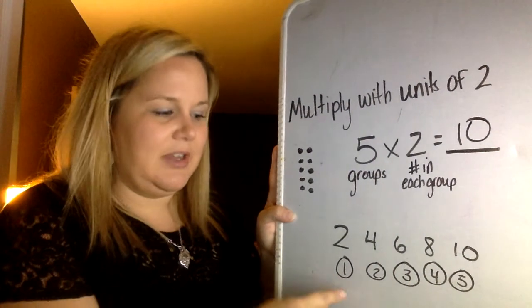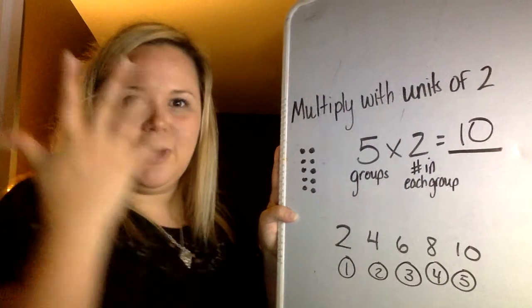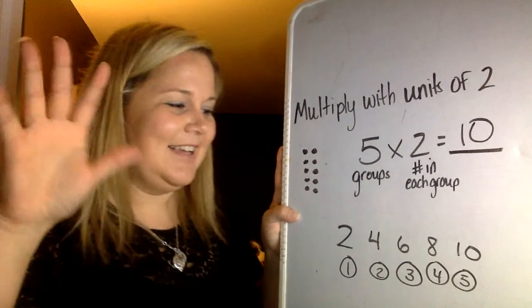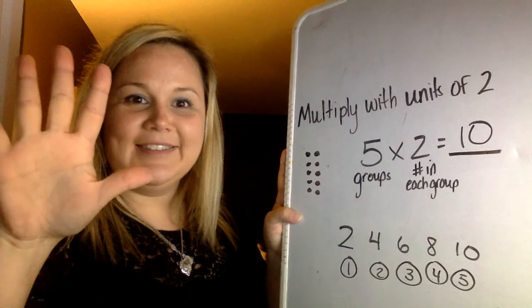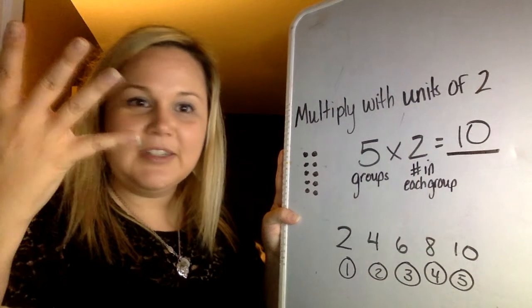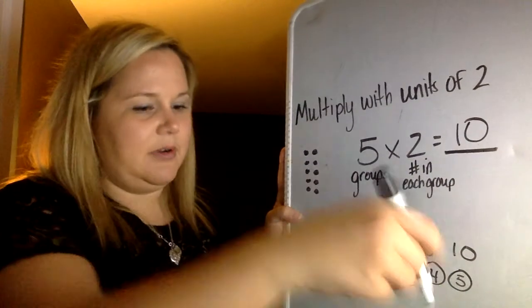But let me show you another way you could do that. Instead of writing out each time, you know how many fingers this are, right? You have 5 fingers on one hand. So you could go 2, 4, 6, 8, 10. Okay? So you counted 5 times so you get your 10.